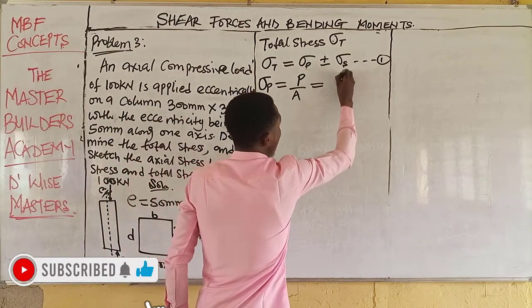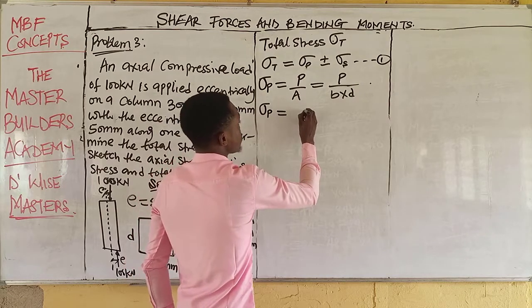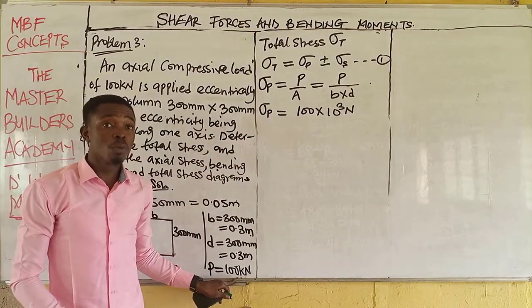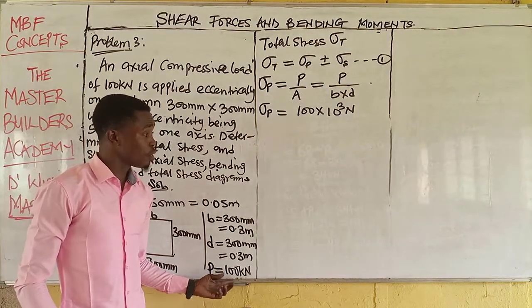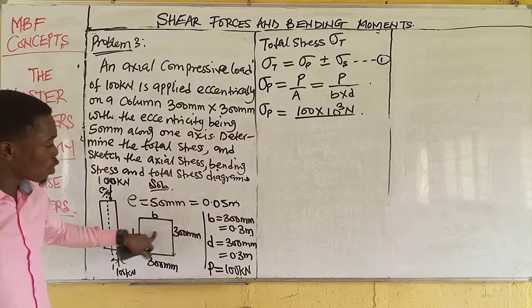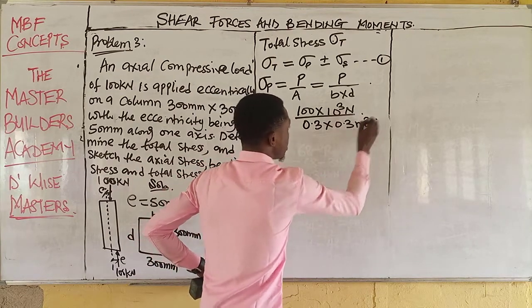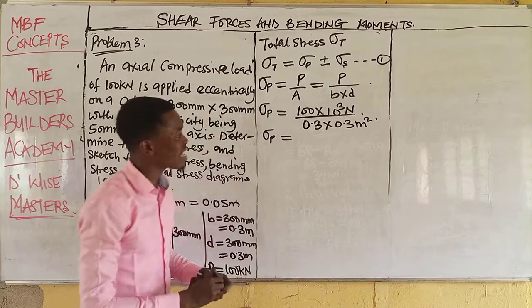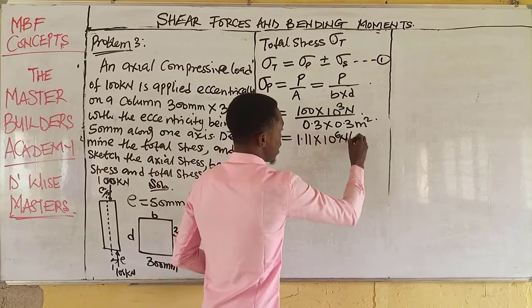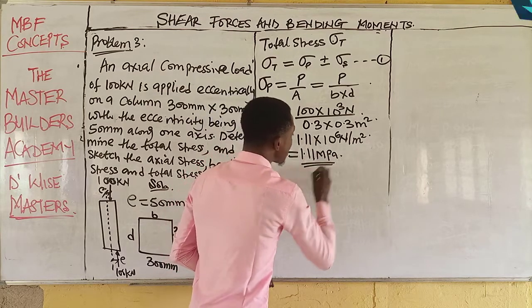The cross-sectional area is B multiplied by D. Substituting into the equation, we have 100 × 10³ N divided by (0.3 × 0.3) m², which gives us 1.11 × 10⁶ N/m². Every time you have a load in kN, you must convert to the equivalent in N. The primary (axial) stress equals 1.11 MPa.